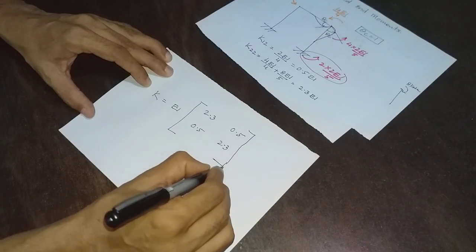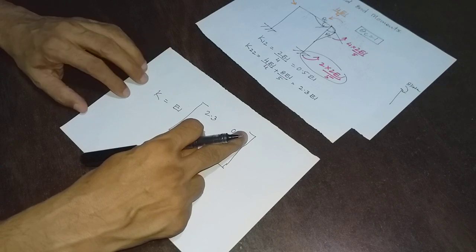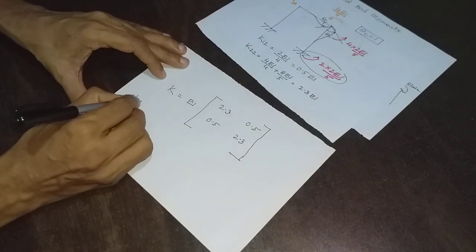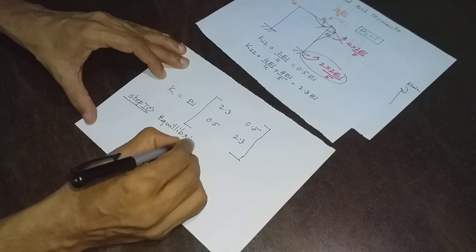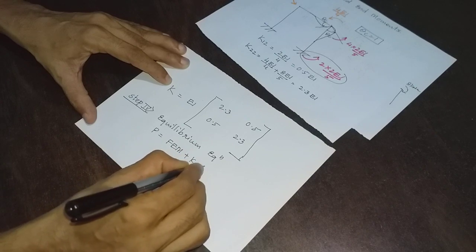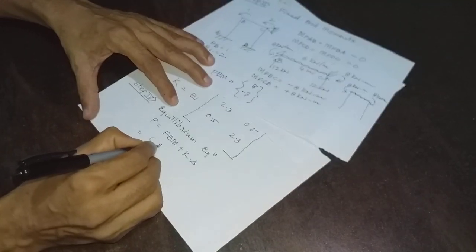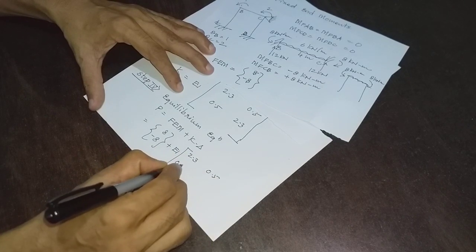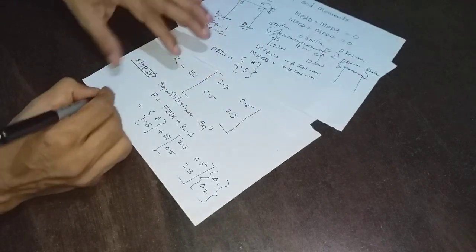Remember that the stiffness matrix must satisfy all properties: diagonal elements should be positive, and off-diagonal elements are symmetric. Since the degree of kinematic indeterminacy is 2, the stiffness matrix is 2×2. Step 4 is the equilibrium equation: P = FEM + K·delta, just as in our previous experience. The FEM matrix is [8, −8], and K is EI × [[2.3, 0.5], [0.5, 2.3]], with unknowns delta 1 (theta B) and delta 2 (theta C).